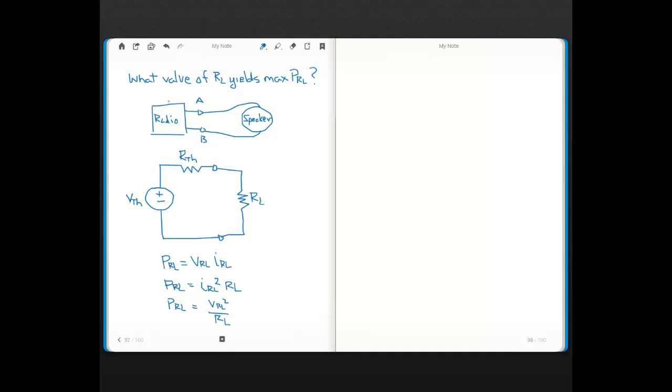One common example is a situation like this where you have a radio and you hook up a speaker. We've learned how you can take any complex circuit and at two nodes you can represent that complex circuit as an equivalent circuit, either Thevenin or Norton. So here at nodes AB, we're representing the radio as a single voltage source and a single resistance with Thevenin values.